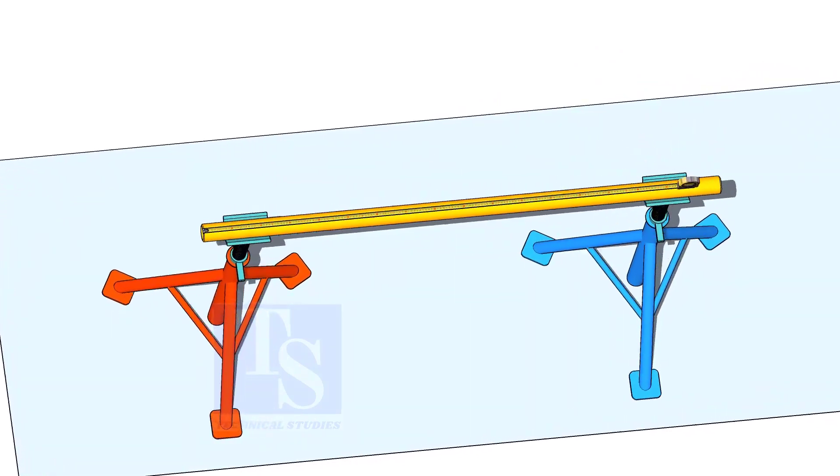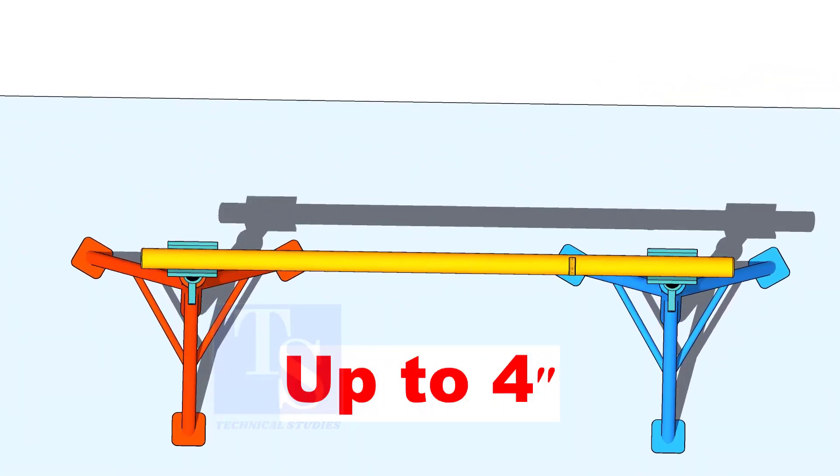For pipes with diameter up to 4 inches, you can use a measuring tape to draw the circular line.